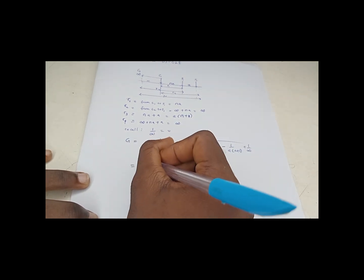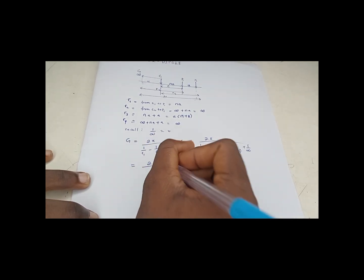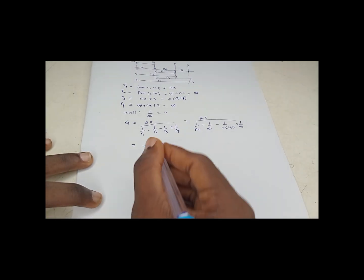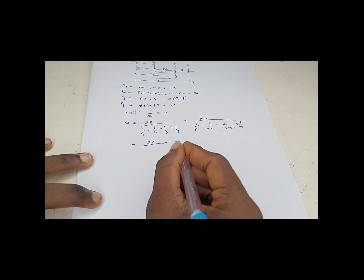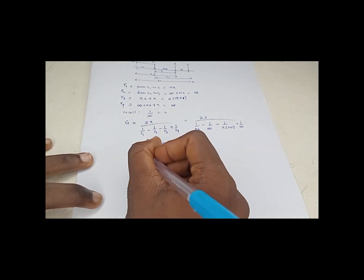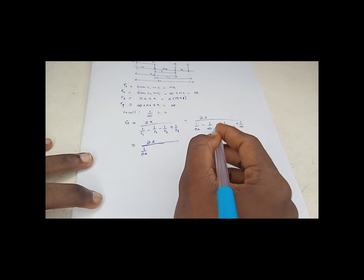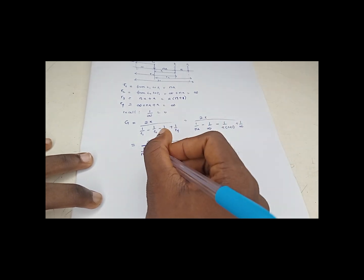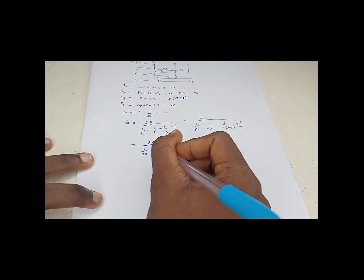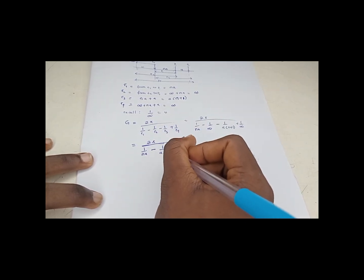So this gives us 2π over 1 over N times A. So here it becomes 0. 1 over infinity is 0, it's also 0. So we'll have 1 over N times A minus 1 over A bracket (N plus 1).